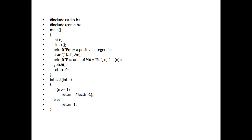When n equals 1, it automatically returns 1. So that is how to calculate the factorial of a given number n with the help of a recursive function. The same program we will now execute with the help of the compiler.